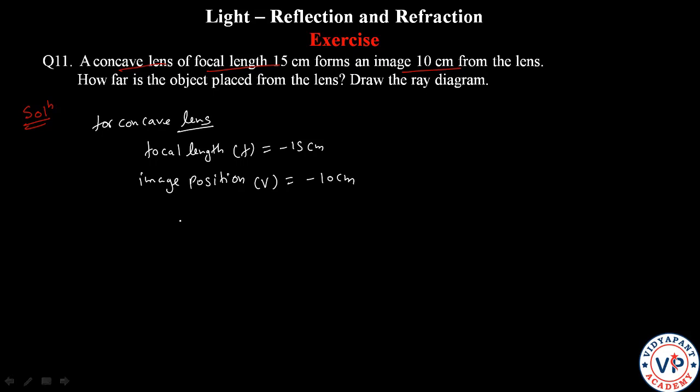Now we are going to find the object position. What will we do? Use the lens formula. The lens formula is 1/f = 1/v - 1/u.